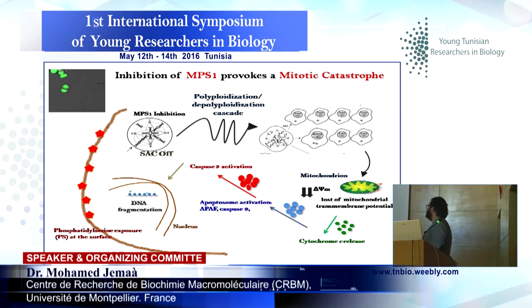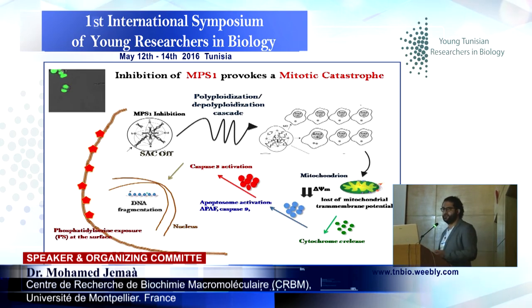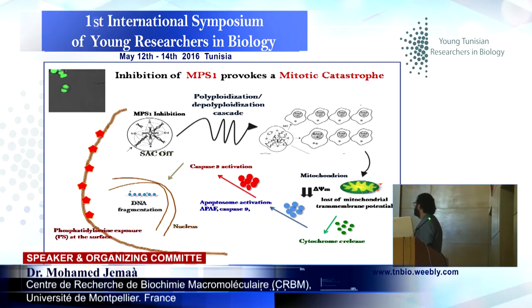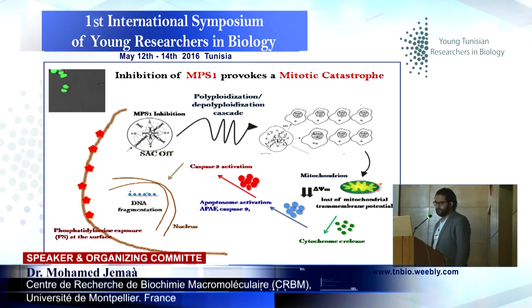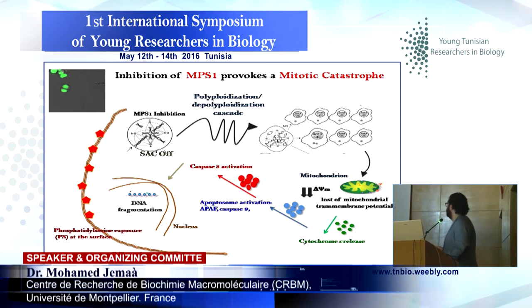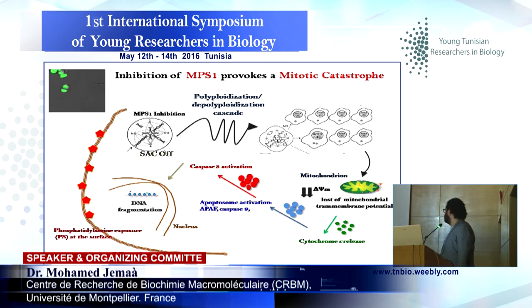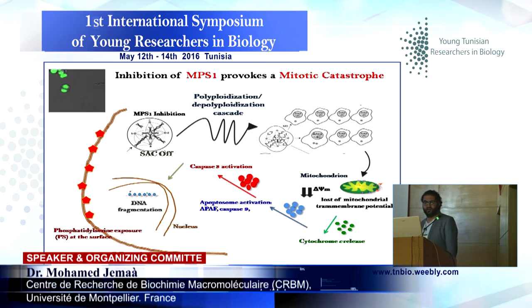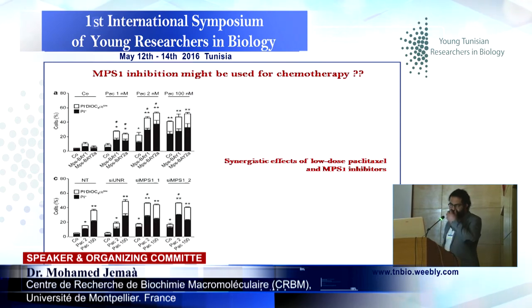We already said that this kind of death is apoptotic, and when we talk about death in cell cycle perturbation, we clearly talk about mitotic catastrophe. So MPS1 inhibition induces a polyploidization cascade leading to an unstable state of the cell, loss of the mitochondrial transmembrane potential, consequent cytochrome C release, activation of caspases, and phosphatidylserine exposure at the surface. So cells die by mitotic catastrophe after MPS1 inhibition.